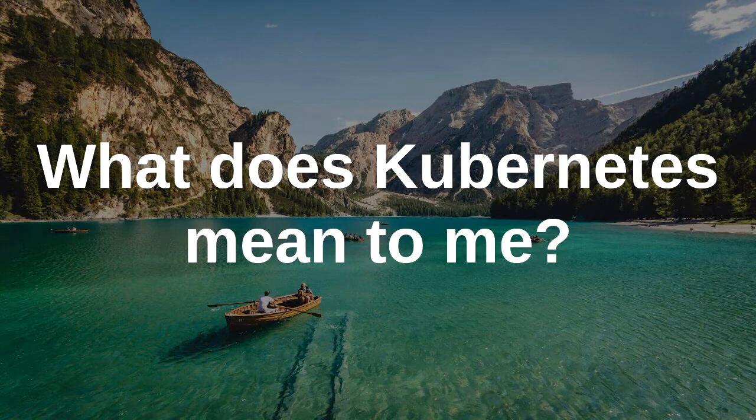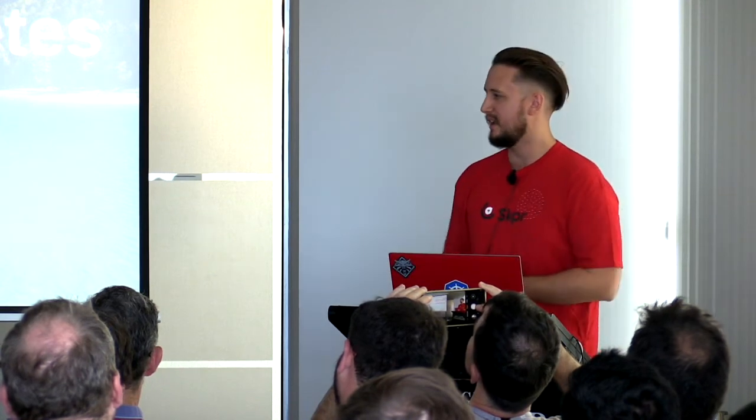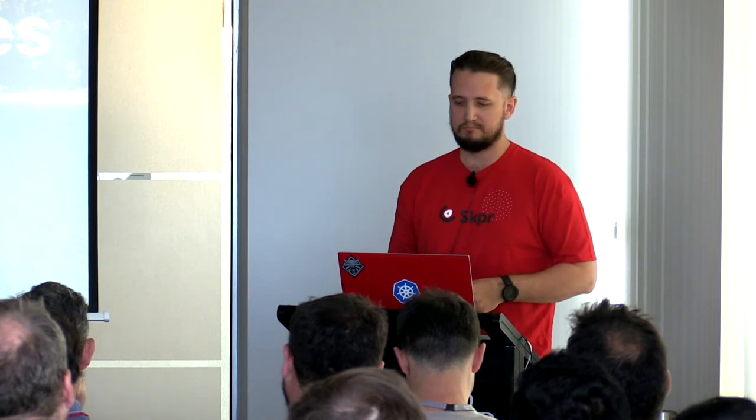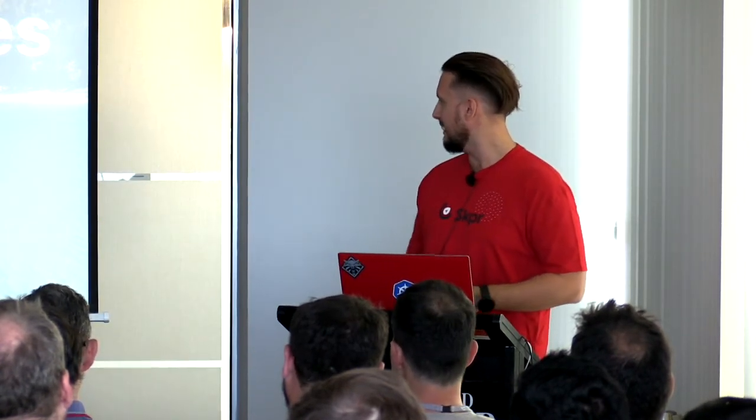This is a standard slide for a lot of Kubernetes talks where people say it's a tool built by Google that went through big growth. There are plenty of 101 talks that go through that. Ultimately the way I want to summarize it is: it's a way to take multiple computers and make them look like one, with a set of APIs.